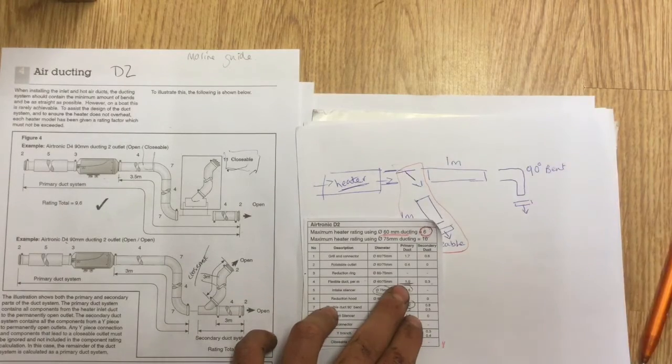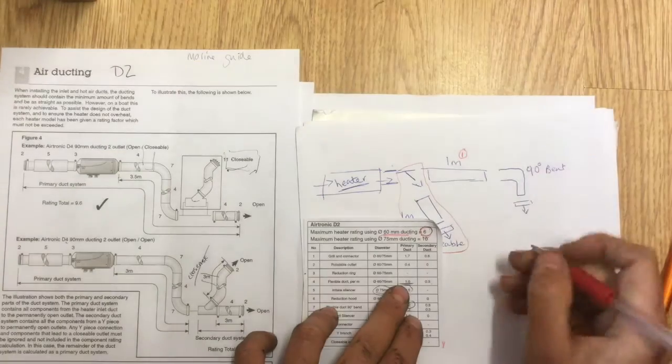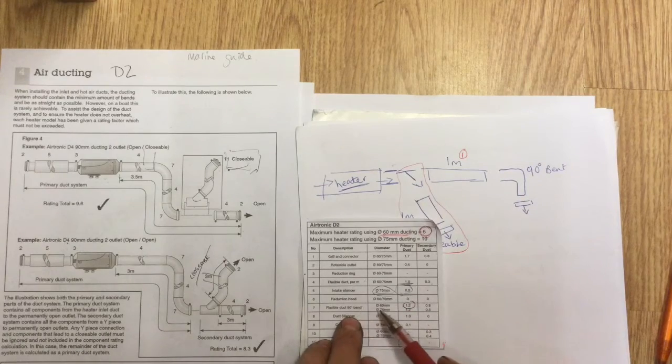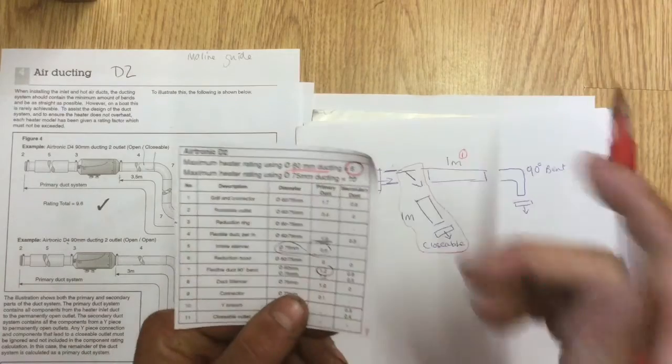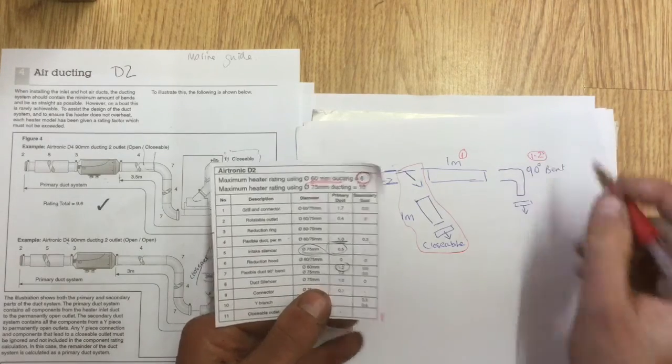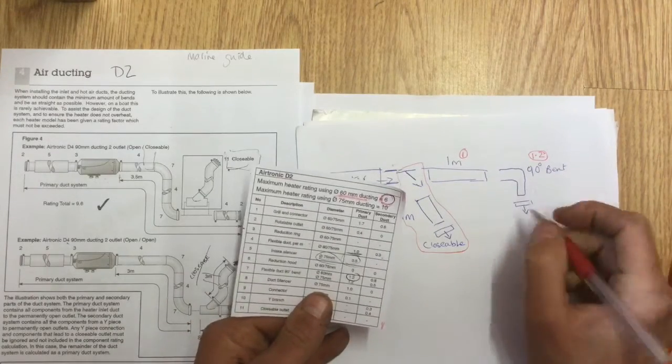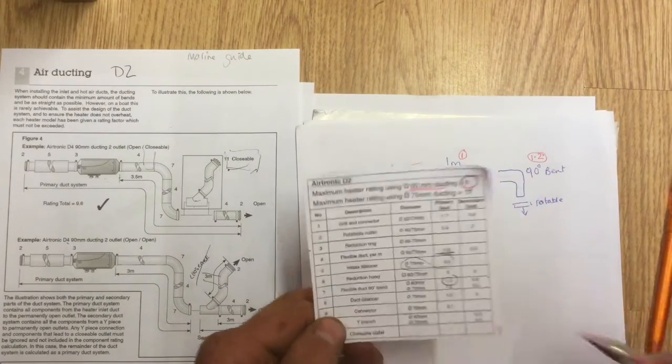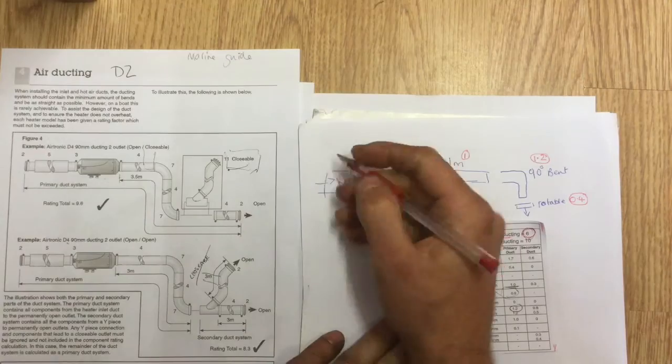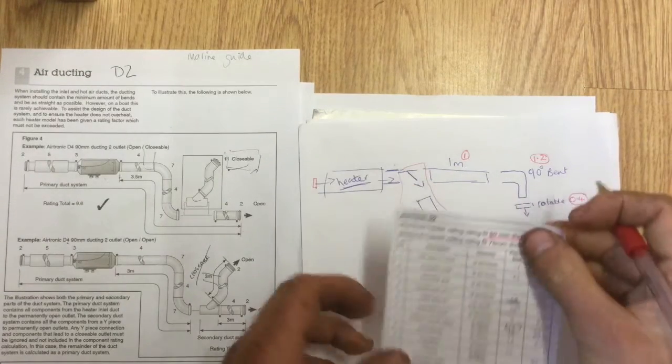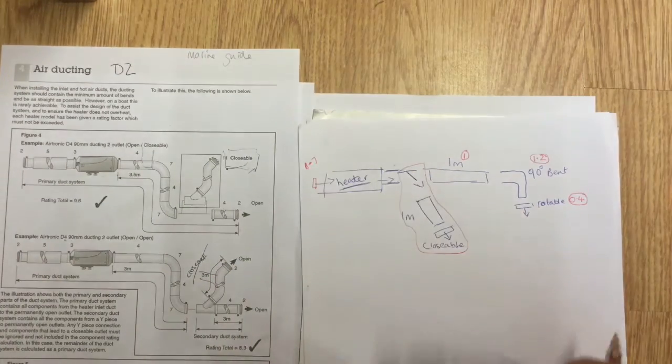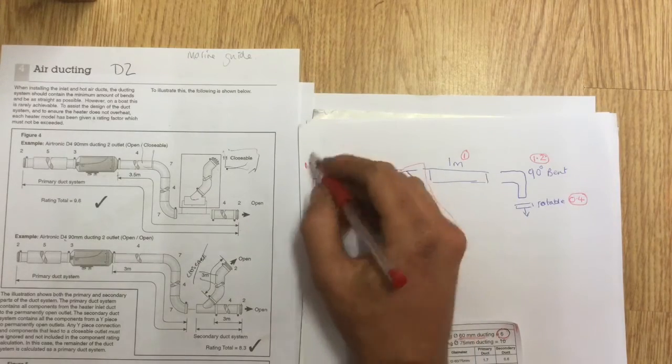Then we've got a 90 degree bend. Looking down this list, we've got flexible duct 90 degree bend at 60, so that gives us 1.2. Then on the end this is a rotatable vent. Looking down here, I've got rotatable outlet that's worth 0.4. On my intake I need to consider - you might have an intake grill just to stop things going in there, and that's worth 1.7.